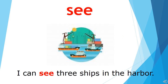The word is 'see.' Children, you all know the meaning of see — it is to look at something. We see with the help of our eyes. You can see in the picture a few ships, so let's use this word in the sentence: 'I can see three ships in the harbour.' Do you know what is the meaning of harbour? A harbour is a place where all the ships put down their anchors — it is a stop where all the ships come and stand.